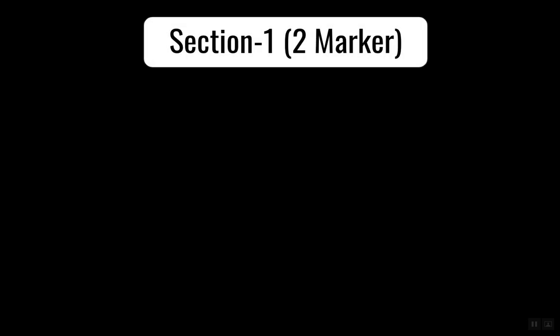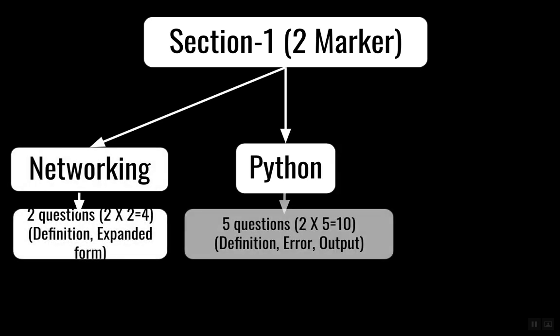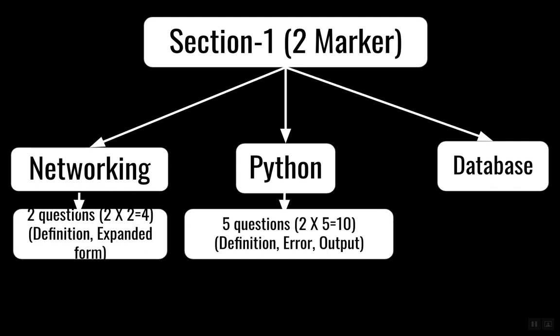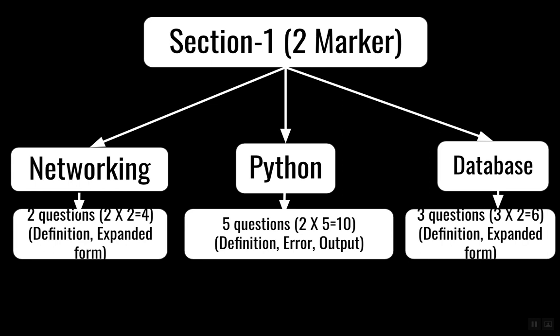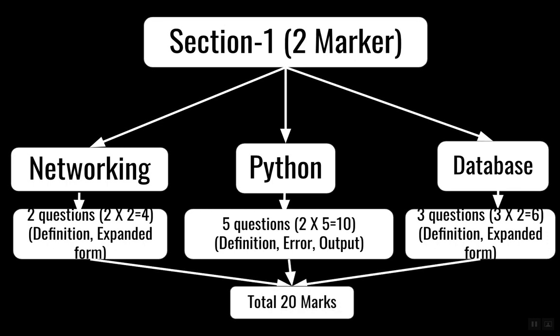The first section of Part B has two-marker questions from networking, Python, and database. This section is categorized around definition-related questions. The paper does not have lots of definitions but does have a few, and expanded forms are very important — you need to know the full forms of DDL, SMTP, TCP, IP, and similar protocols. In databases they've covered DDL, DML, select queries, and in Python there are output, definition, and error questions. That makes up a total of 20 marks.